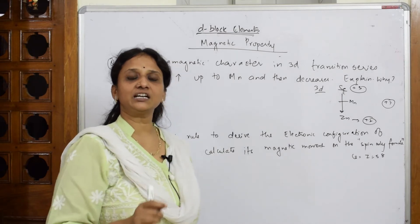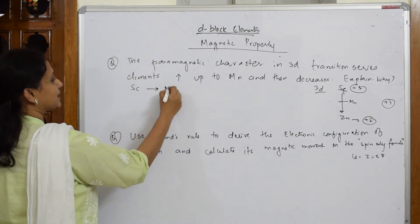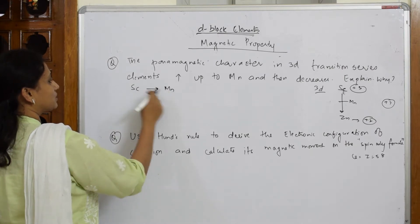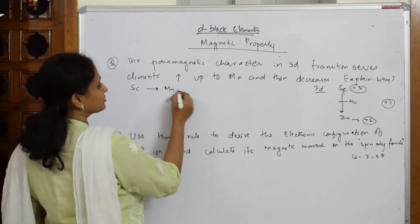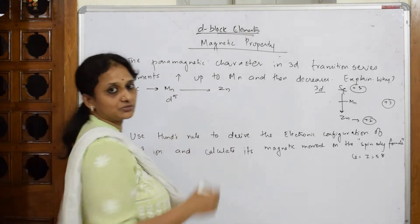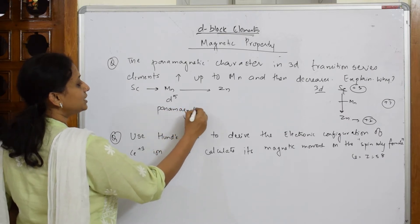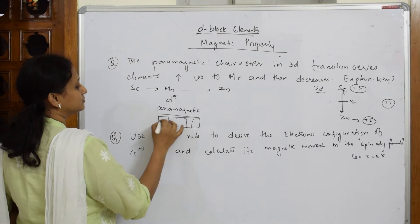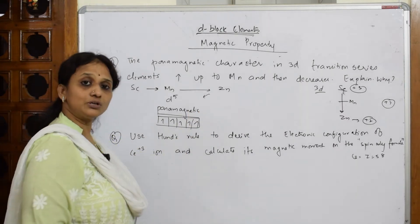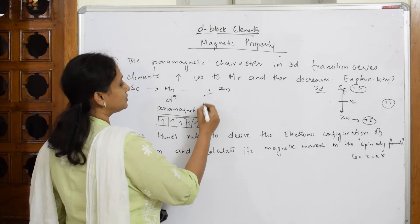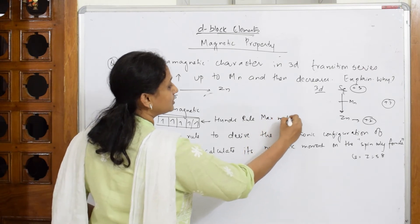From scandium to manganese, one electron is filled at a time until it reaches the d5 configuration. Once d5 is reached, the electrons are half-filled and the element is paramagnetic. After d5, from manganese to zinc, you start pairing the electrons. According to Hund's rule of maximum multiplicity, you begin pairing up the electrons one after the other.